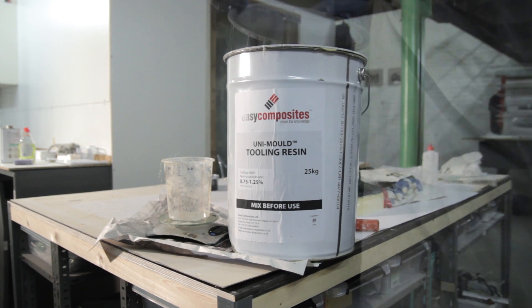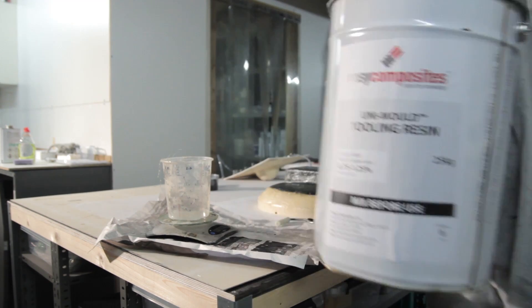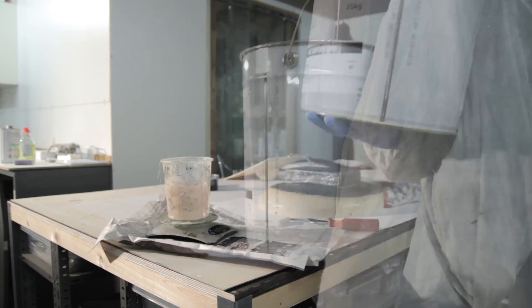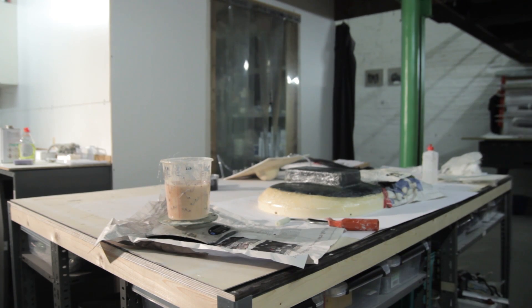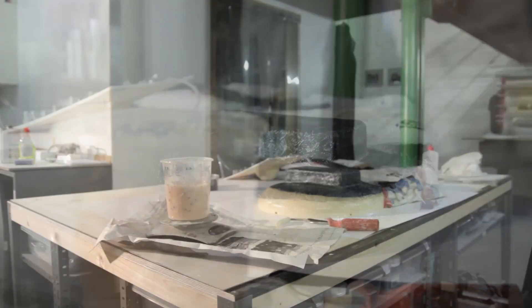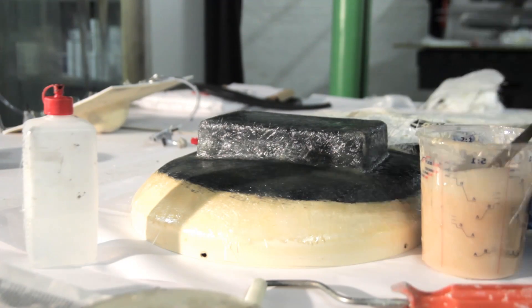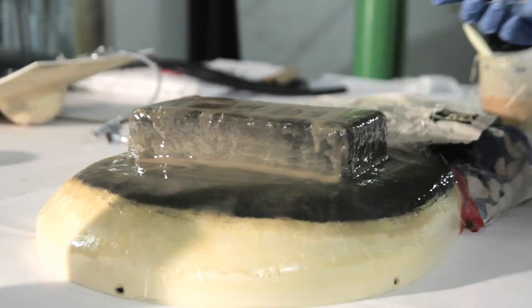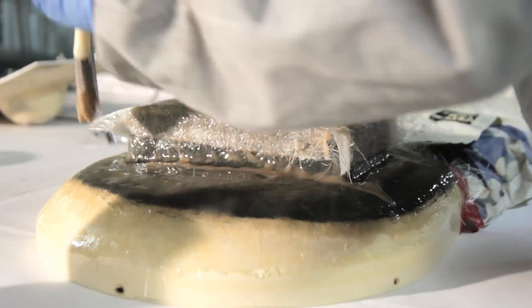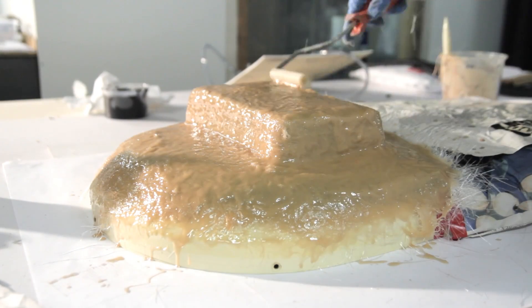This is the big bucket and I'm trying some new stuff with editing. This is how a cup fills quite easily. Here I'm adding the catalyst, I think it's around 0.75 to 1.25 percent, but you can see the technical data sheet on the Easy Composites website.